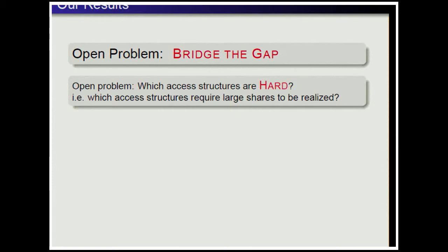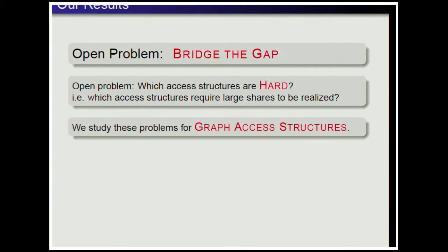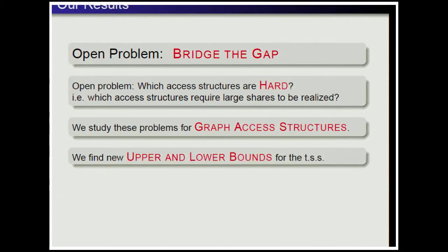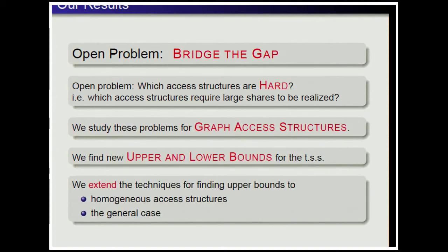The main motivation of our work was to bridge this gap. In particular, we wanted to study which access structures are hard — meaning which access structures require large shares to be realized. We studied these problems for graph access structures and found new upper and lower bounds on total share size, extending techniques to homogeneous and general access structures.